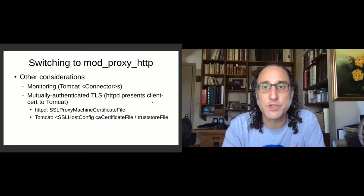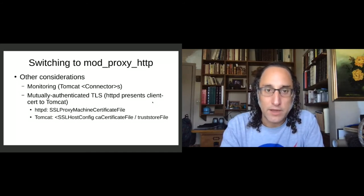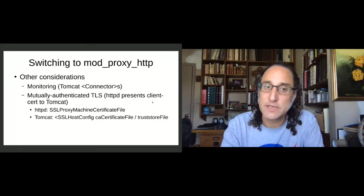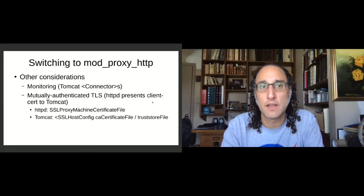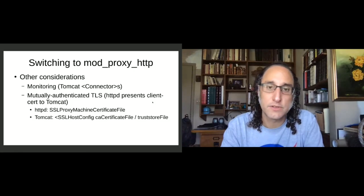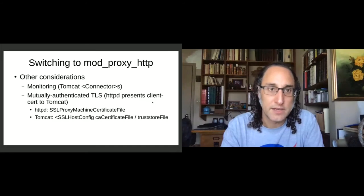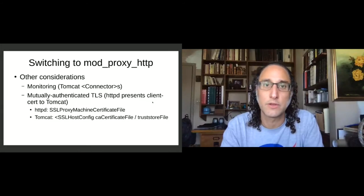A few other considerations for switching protocols: monitoring — if you've been monitoring AJP connections one way, you'll need to change that to monitor HTTP connections instead. You might also want to consider mutually authenticated TLS. What that means is not only is the reverse proxy trusting the Tomcat server, but you can also use a client certificate at the reverse proxy so that it authenticates to the origin server as well, giving you a very secure network between the reverse proxy and the Tomcat node.